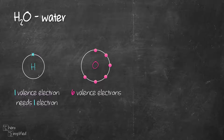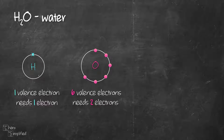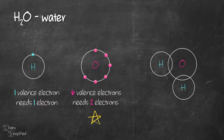Oxygen, on the other hand, has six valence electrons, therefore it needs two more electrons in order to achieve octet. Since oxygen needs more electrons than hydrogen, we're going to place oxygen in the center and surround it with hydrogens. Oxygen and hydrogen will share one electron each.